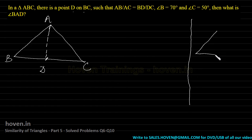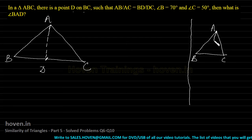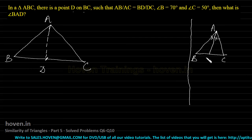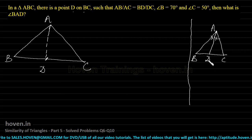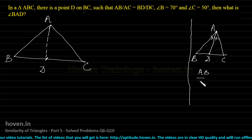If the angle bisector of A cuts BC at D, then we proved at that time that AB by AC should be equal to BD by DC.